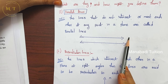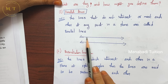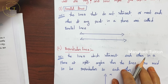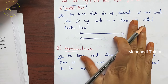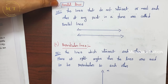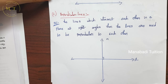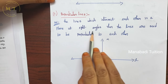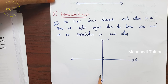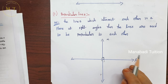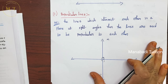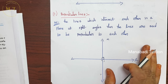To define parallel lines, you first need to define point and line. Perpendicular lines: lines which intersect each other in a plane at right angles are said to be perpendicular to each other. To define perpendicular lines, you first need to define right angle.